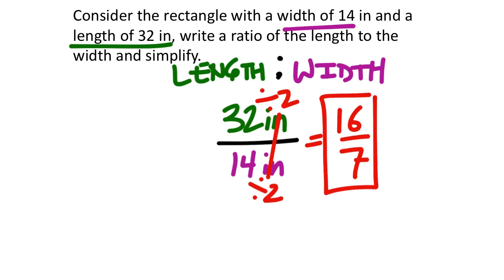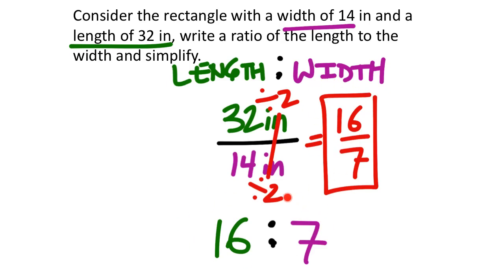As a ratio that's 16 to 7, written with the colon. If the homework asks for a fraction, write it as 16 over 7. If they show the colon and ask you to fill in the boxes, write 16 and 7. It should specify on the homework which format is wanted.